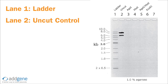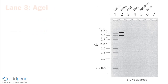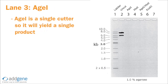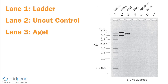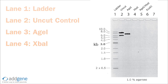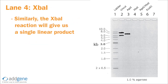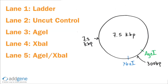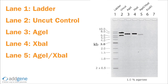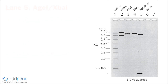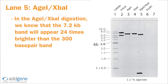Now that we've drawn our control, let's move on to our digestions. Lane 3 is the AGE1 digestion, which yields a single product. And because it's linear, its migration is consistent with the marker, so we expect to see a band at the 7.5 kb mark. Lane 4 is the EXPA1 digestion — just like AGE1, it yields a single linear 7.5 kb band, so we expect to see a band in the same 7.5 kb spot. Lane 5 is the double AGE1/EXPA1 digest. According to our map, we would expect two products: a 7.2 kb band and a 300 base pair band. Since these two fragments appear in a one-to-one molar ratio, we know the 7.2 kb band will be 24 times brighter than the 300 base pair band because it is 24 times as large.